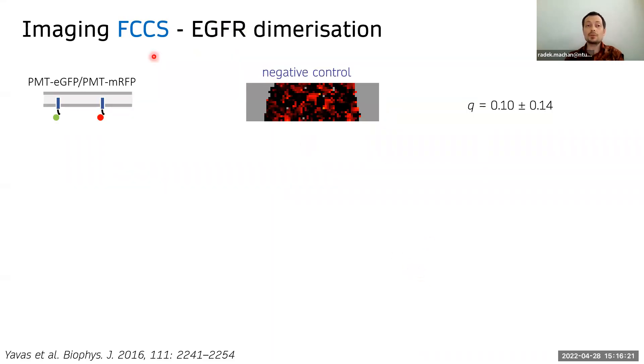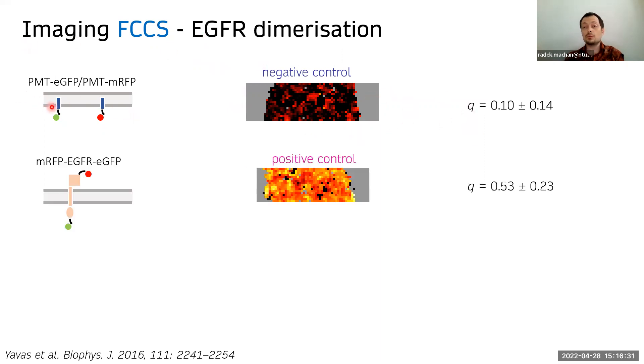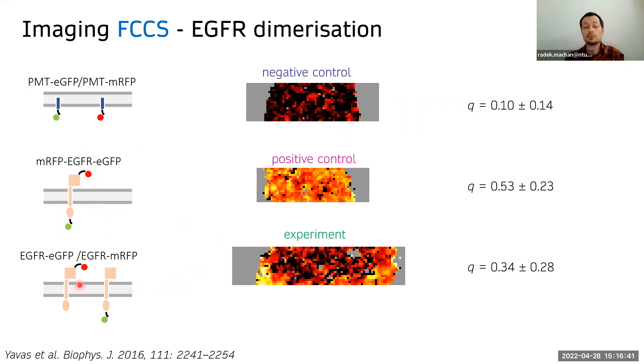This is an example imaging FCCS of EGFR. So we are looking at dimerization of EGFR. We take first negative control of independently moving molecules, positive control, a single molecule labeled by both fluorescent proteins. And the actual experiment where there are EGFR molecules labeled by green and EGFR molecules labeled by red protein. And we see quite a high level of cross correlation showing us that there are clearly some dimers or even higher oligomers.